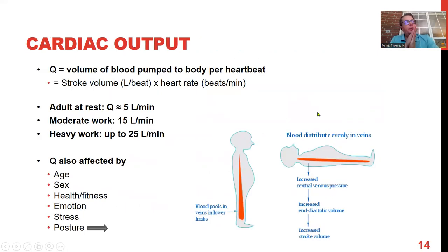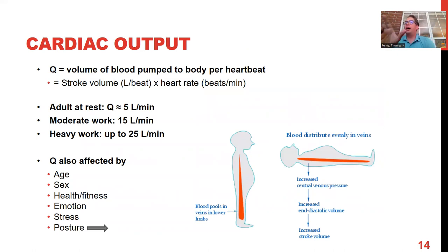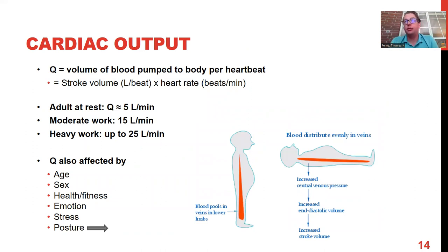Just like we talked about oxygen absorbed per unit time as an indicator of metabolic capacity, we can also talk about how much blood can reach the extremities per unit time. Q is the metric we use — cardiac output. It equals stroke volume (volume of blood pumped per ventricular contraction) multiplied by heart rate in beats per minute.